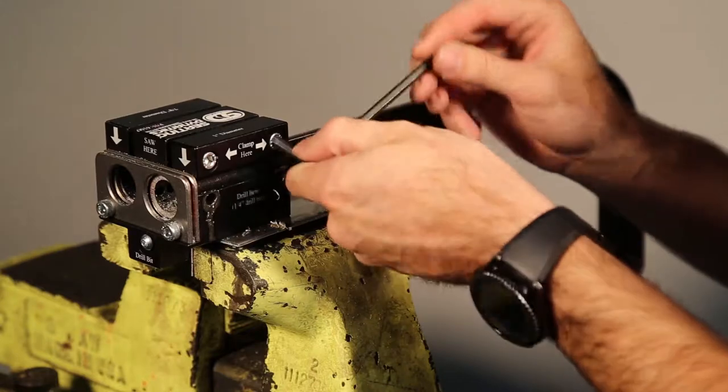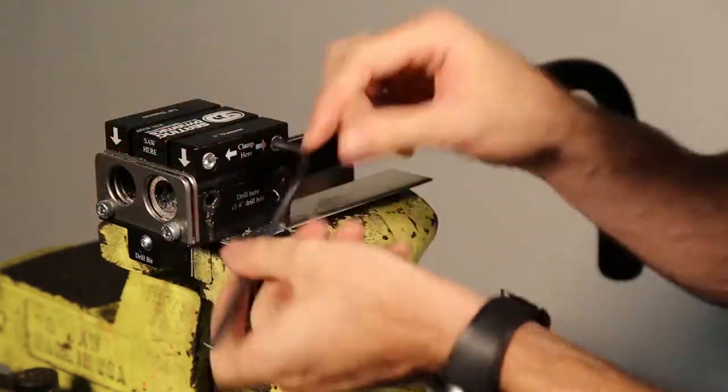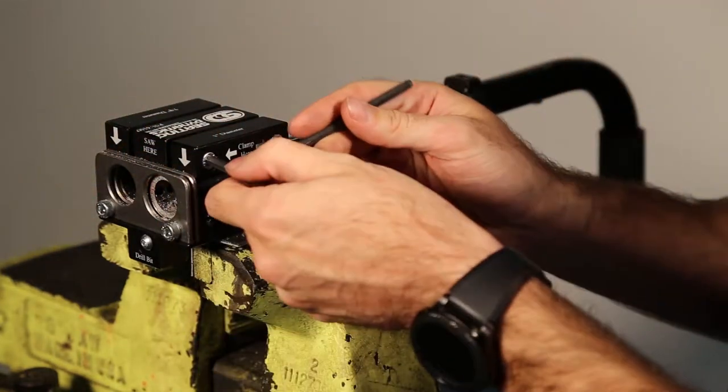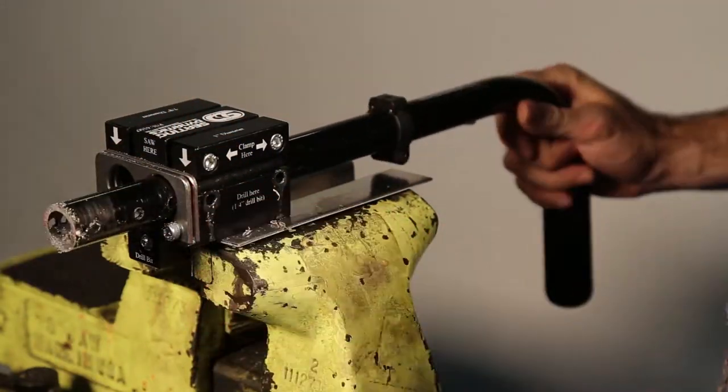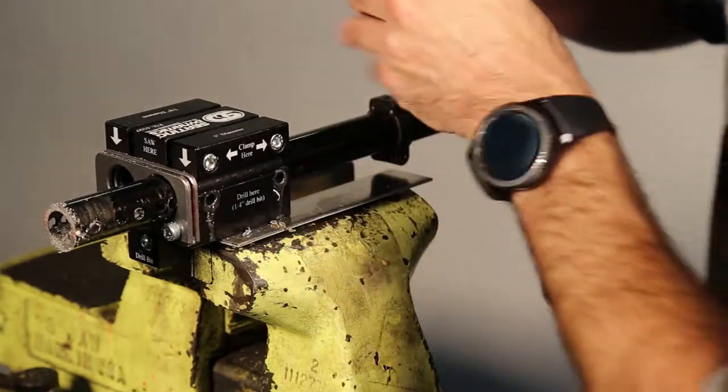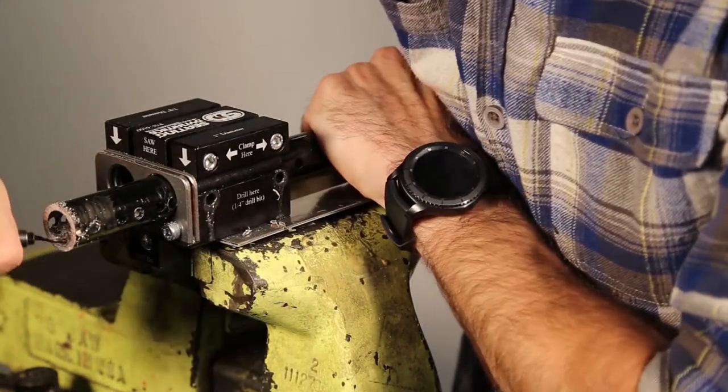Loosen the clamp screws in preparation for removal of the back cane from the jig. Prior to removal, push the back cane further out of the saw here end and deburr the recently cut face accordingly.